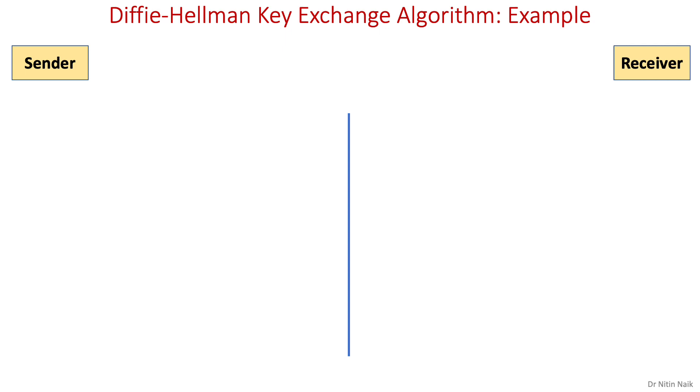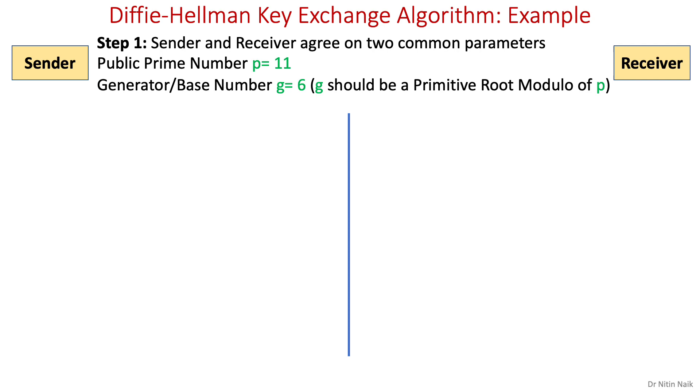Let's look at an example to understand Diffie-Hellman key exchange algorithm. In step one, both sender and receiver mutually decide upon two public numbers. Here, the first public prime number p equals 11 and the second generator or base number g equals 6, where g should be a primitive root modulo of p. In practice, public prime number should be a very large number.